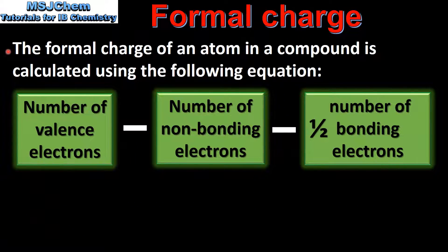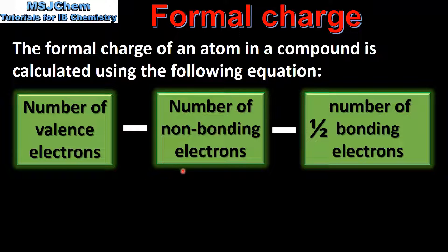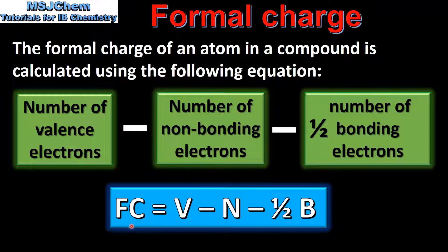The formal charge of an atom in a compound is calculated using the following equation. It's the number of valence electrons in the atom, minus the number of non-bonding electrons, minus half the number of bonding electrons. So the formal charge is equal to V, the number of valence electrons, minus N, the number of non-bonding electrons, minus half B, half the number of bonding electrons.